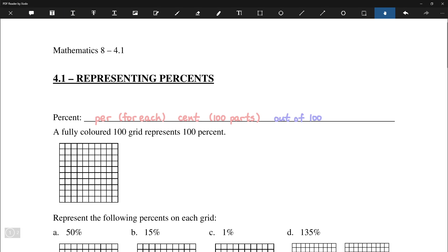When we're using diagrams to represent percents, we generally can use a 100 grid to represent 100%. So for example, this grid, if fully colored, would be equal to 100%. Notice that this is a 10 by 10 grid, and that's how we get 100 squares.